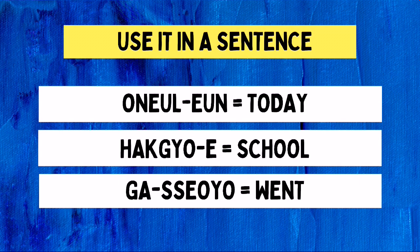The first part of the sentence is onulun, which means 'today.' The particle un is added to indicate that this is the subject. The second part is hakyo-e — the word hakyo means school, and since this is a place, we need to add e, so hakyo-e means 'at school.' The third part is gaso-yo, which came from the root verb gada, and gaso-yo is the past tense form, meaning 'went.' So combining these three parts, the sentence means: Today, I went to school.